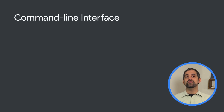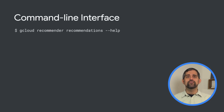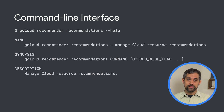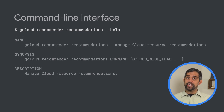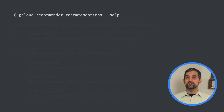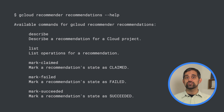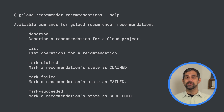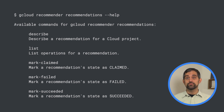Recommendations can also be accessed from the gcloud command line interface for more advanced and programmatic management. Accessing recommendations through the CLI reveals additional information and properties, such as priority and primary impact category. These properties are helpful in identifying recommendations that could have the biggest effect on costs, performance, and security.